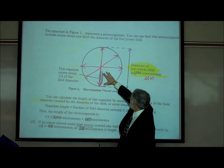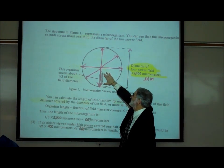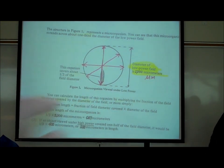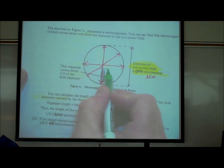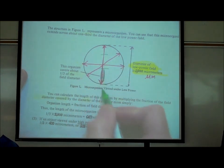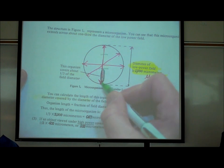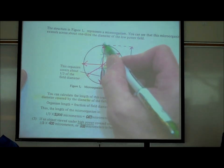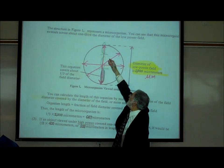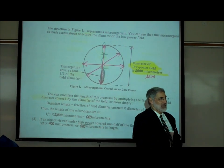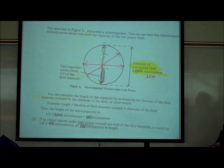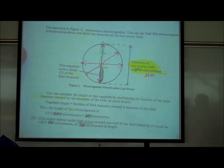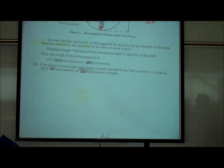We're looking at an organism under the microscope, and it looks like its length is about one-third of the diameter. Can you see that if you placed three of these organisms end to end, they'd span the diameter? So we can estimate its length is one-third of 2,000 micrometers.